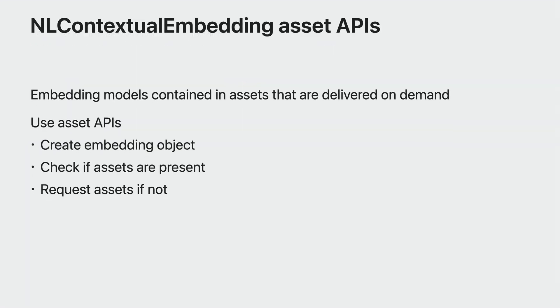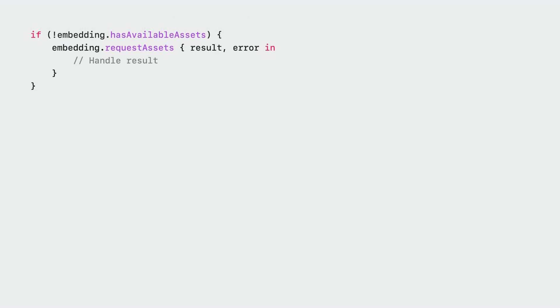One thing to keep in mind is that, like many other natural language features, these embedding models rely on assets that are downloaded as needed. NLContextualEmbedding provides APIs to give you additional control over this — for example, to request download before use. You can ask whether a given embedding model currently has assets available on device, and if not, put in a request which will result in their being downloaded. Some of you may be asking: I train models using PyTorch or TensorFlow — can I still use these new BERT embeddings? Yes, you can. We provide these pre-trained multilingual embedding models that you can use as an input layer to just about any model you want to train.